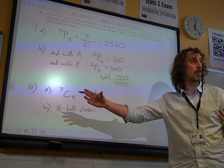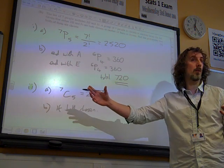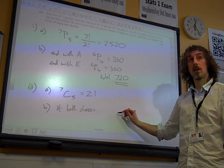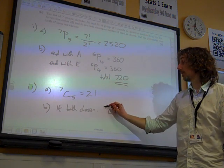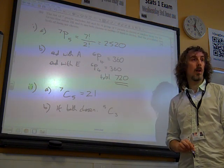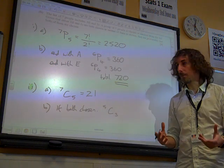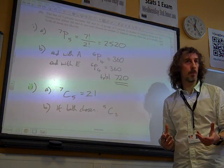And we've got to choose the remaining three from the remaining five people. So, we make up the rest of our selection by doing 5C3, which is ten.